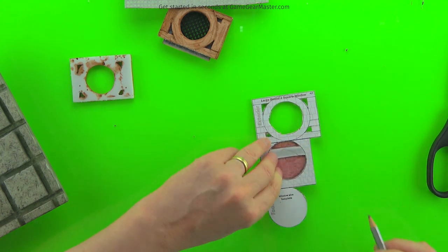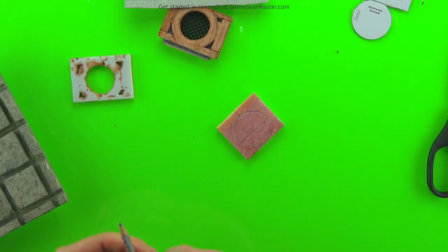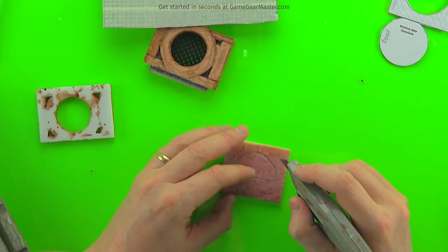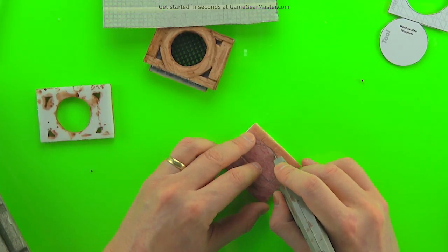You'll also notice that this piece of interior wall is also pre-painted. And that's because if you notice on the finished circular window piece up top, there are small parts of the interior wall that will be visible.